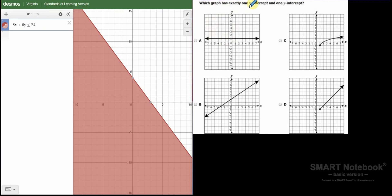Which graph has exactly one x-intercept and one y-intercept? Well, which one hits the x-axis once? Which one hits the y-axis once? Well, this line never hits the x-axis. It doesn't have an x-intercept. This one never hits the y-axis. This is the only one that has an x-intercept and y-intercept. This one never crosses the y-axis. Our answer is B.